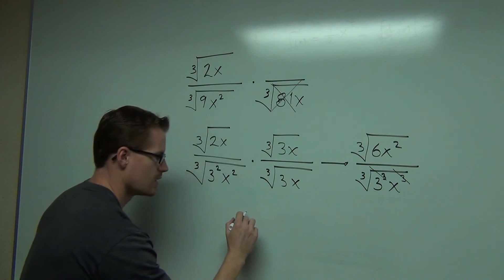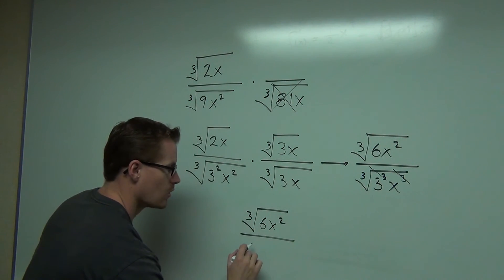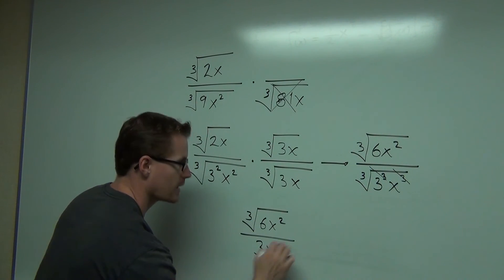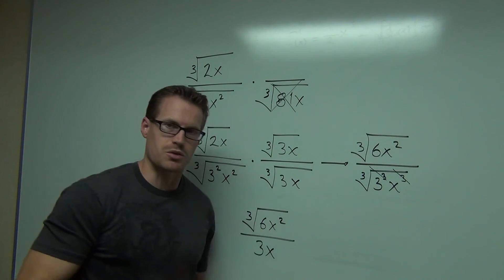Those simplify. We get the cube root of 6x squared all over 3x. Cross that out, you get a 3. Cross this out, you get an x. That leaves us with 3x.